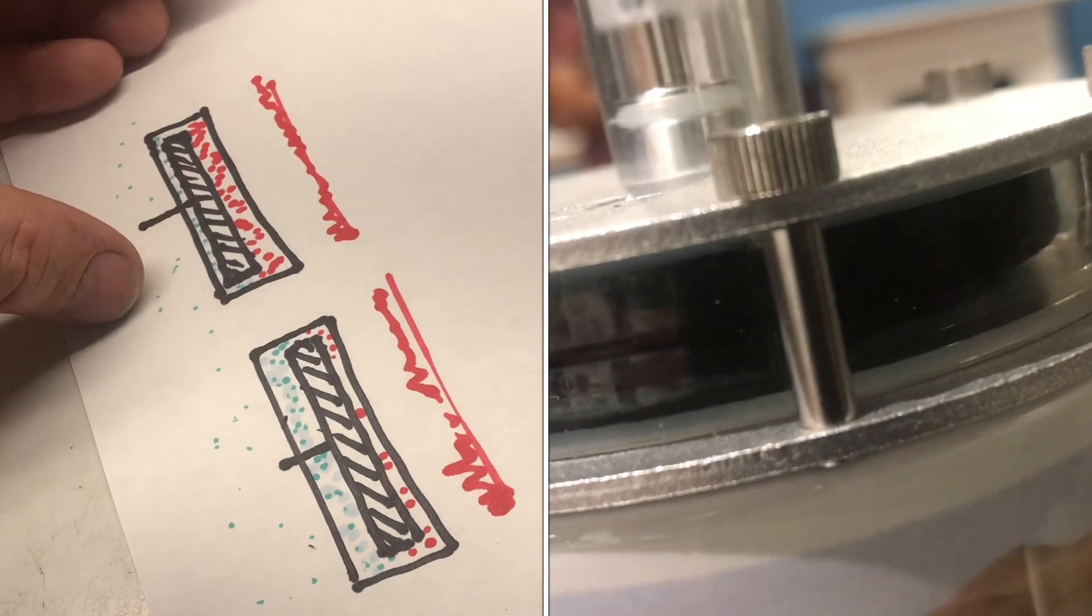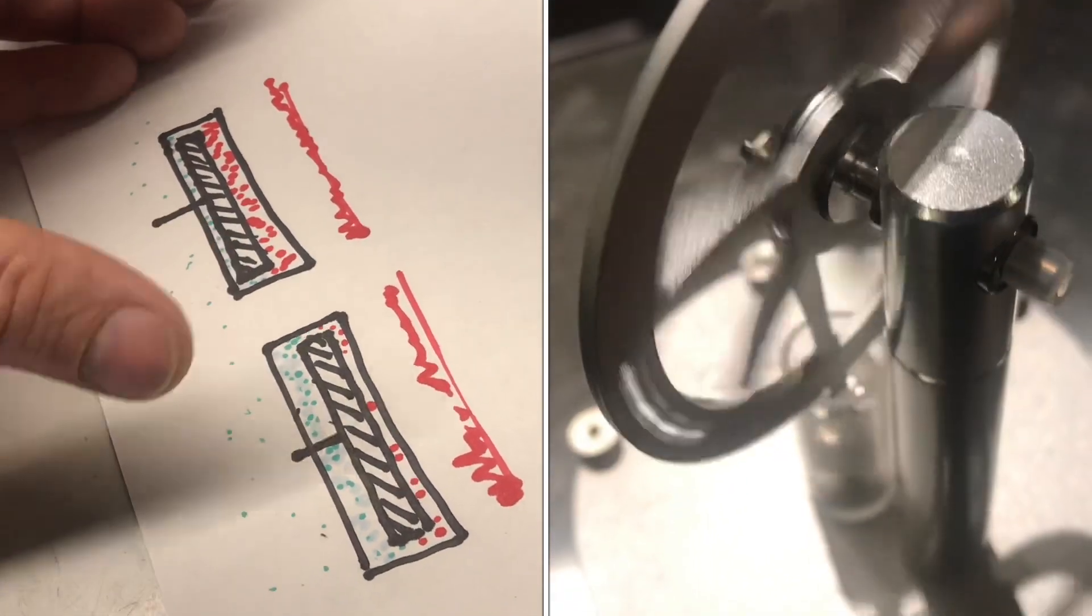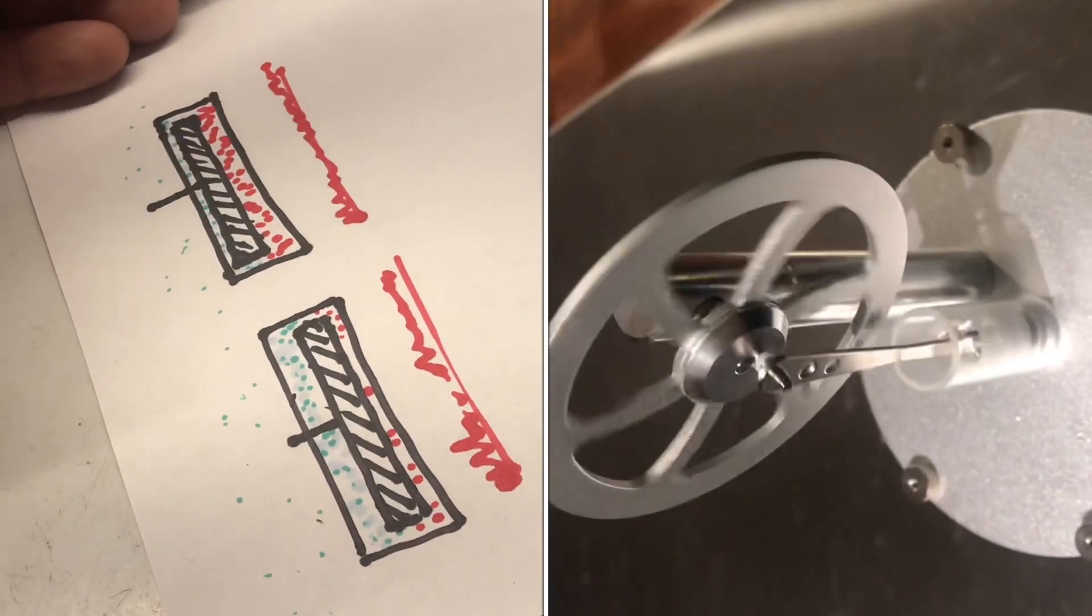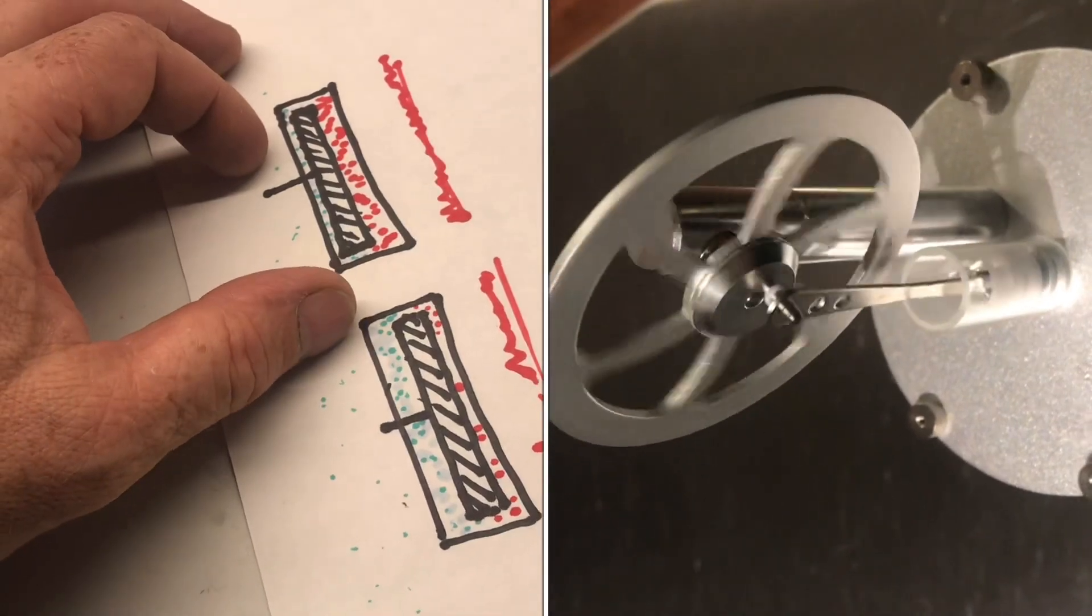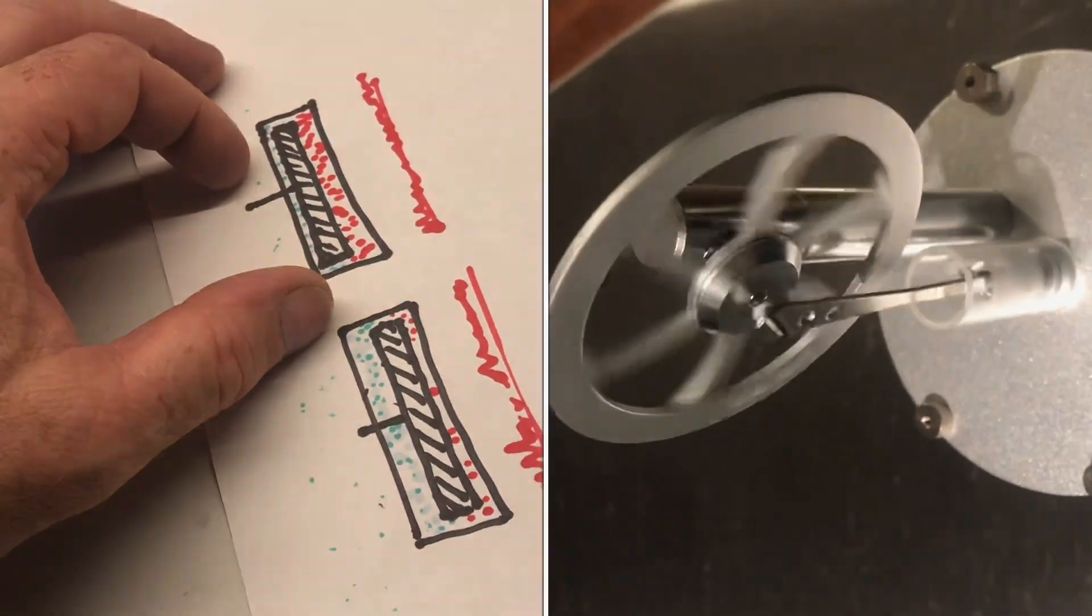One very large advantage of a Stirling engine is you can take any heat source and make the engine run. If you ever wondered how a Stirling engine worked, this is the basic idea.